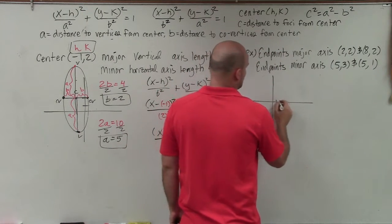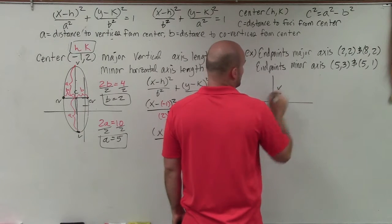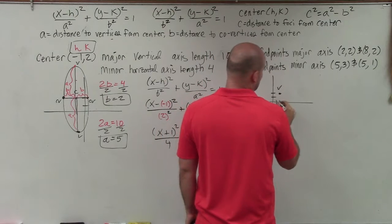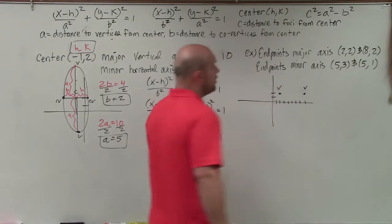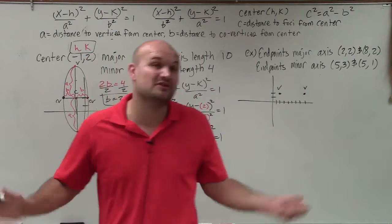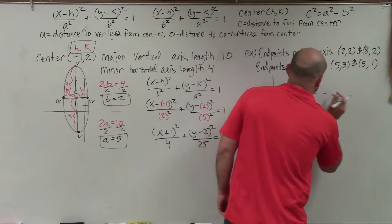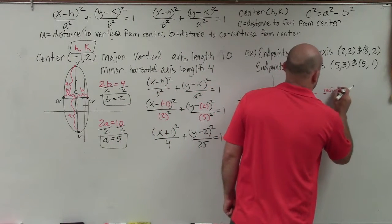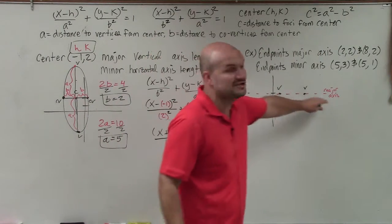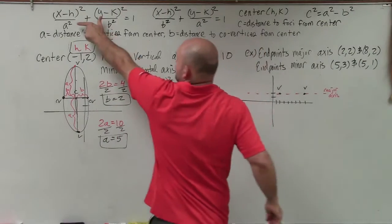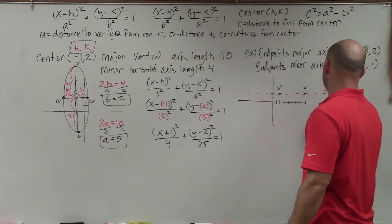I plot the point 2, 2 — that's one endpoint of the major axis, so that's one vertex. The other endpoint is 8, 2. Just by plotting that first piece of information, I can now determine that my major axis is horizontal, and therefore my minor axis is going to be vertical. Since the major axis is horizontal, I'm going to use the horizontal ellipse equation rather than the vertical one, so I'll write that equation down.